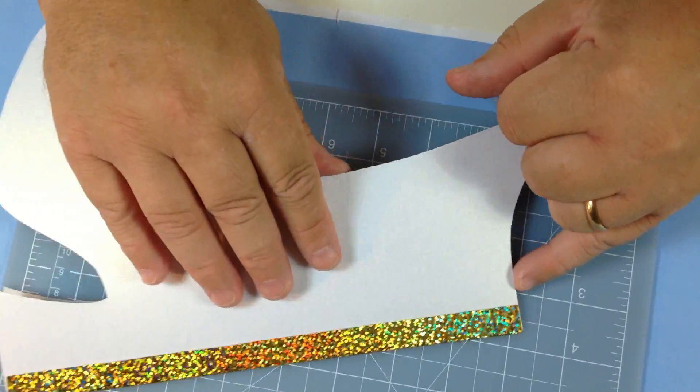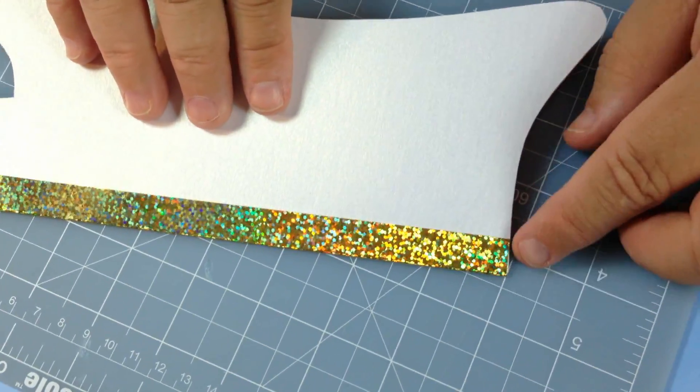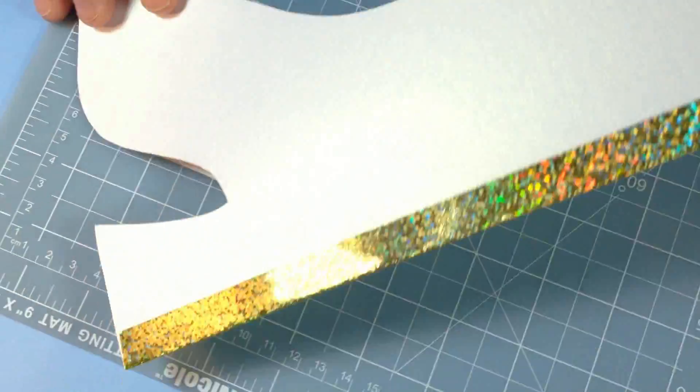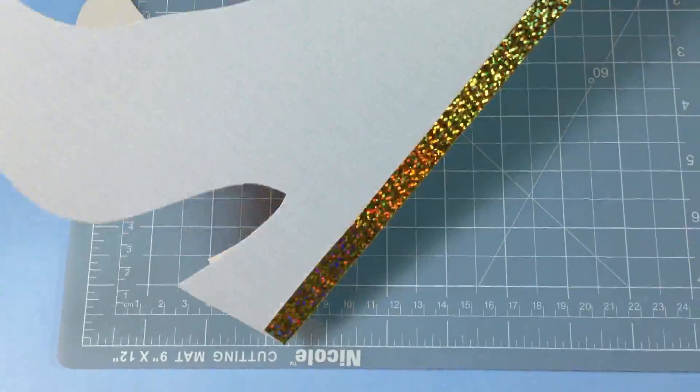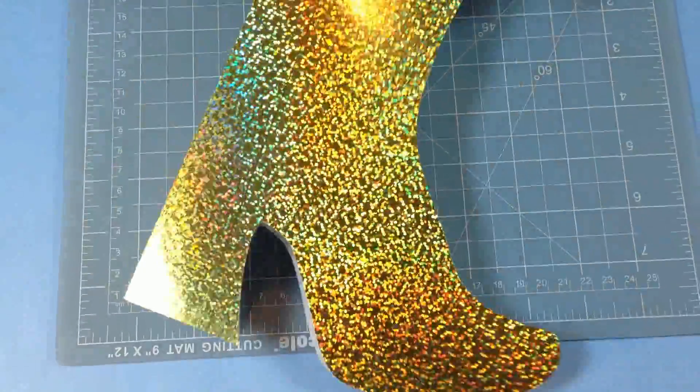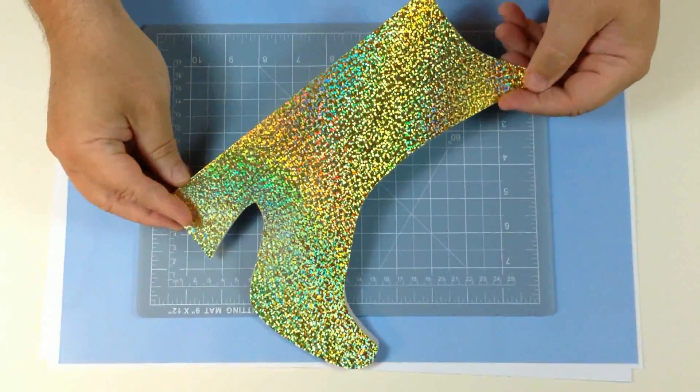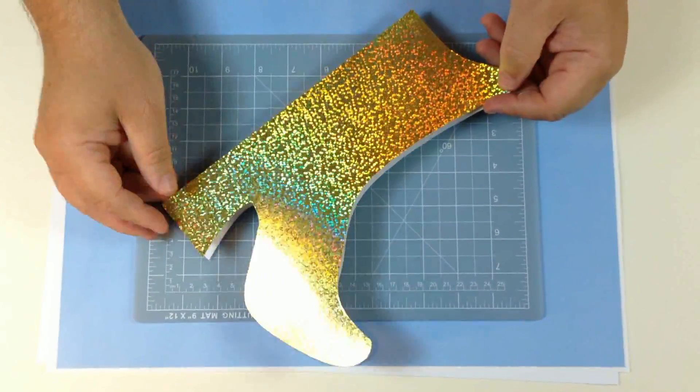If you've cut it so it overlaps here a little bit, you can also take your scissors and just trim it. So there we've got the back of the boot, and I think that actually looks quite jazzy. There's the front of the boot, so there's your boot ready for decorating in any way that you want.